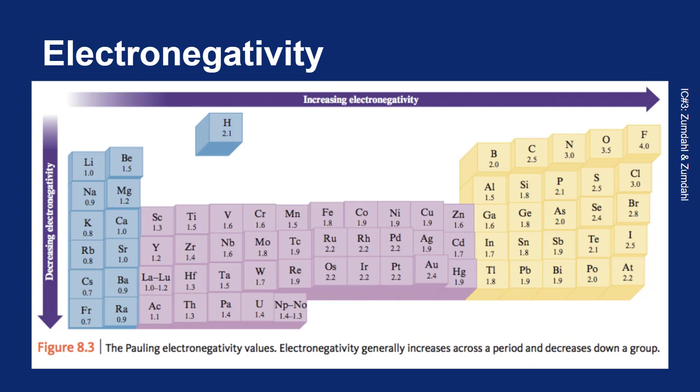The smaller your atom, the more of an attractive pull it has on electrons. So cesium and francium, which are really large atoms, have very little pull on electrons and very low electronegativity values. Fluorine, a relatively small atom, has a really strong pull on electrons and a really high electronegativity value.